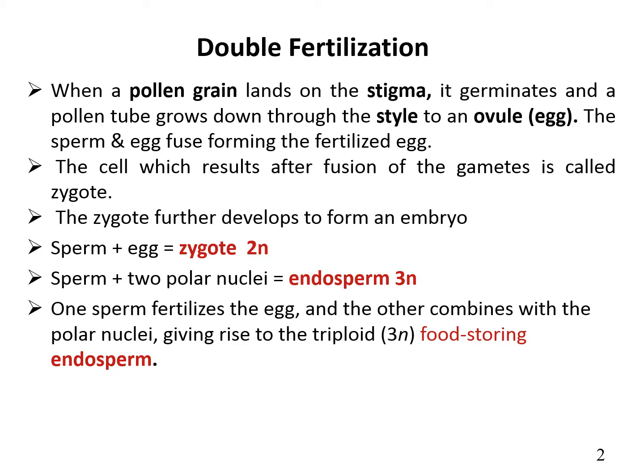Okay students, as I mentioned earlier, angiosperms are characterized by 3F: flower, double fertilization, and fruit. So let's discuss about double fertilization.